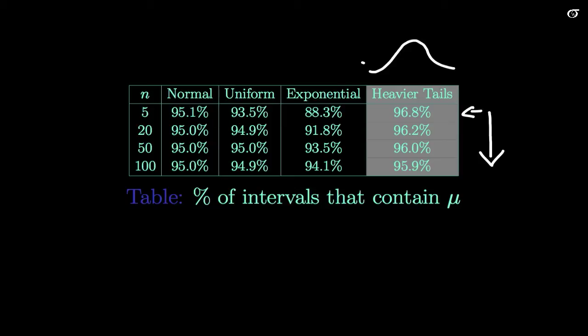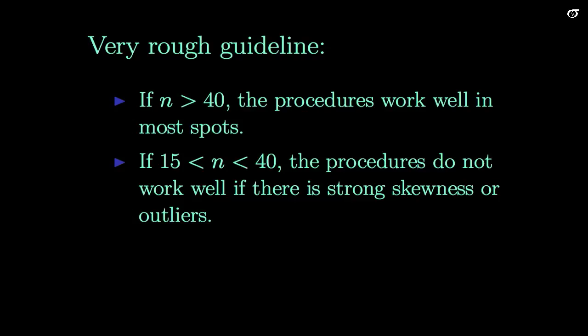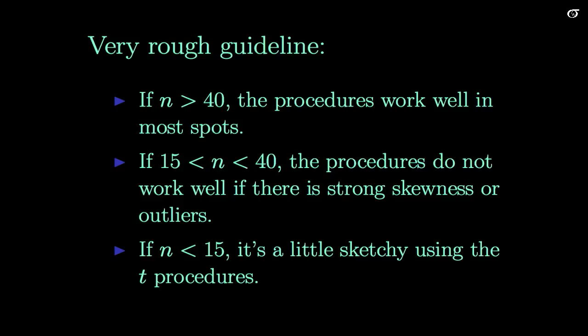Overall, when the normality assumption is violated, the true coverage probability of our 95% interval will actually be different from 95%. It might be quite a bit less than 95%, but as the sample size increases, it tends towards 95%. As a rough guideline, if we have a sample size of at least 40, these procedures work fairly well in most situations. But if our sample size is lower than that — especially if there's skewness or outliers — the procedures start to break down. Once we start creeping below 15 or so, it's getting sketchy using those t procedures, and we should be confident the normality assumption is reasonable before using them, otherwise we might be reporting misleading results.